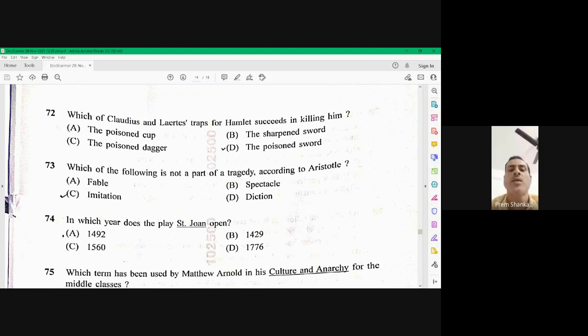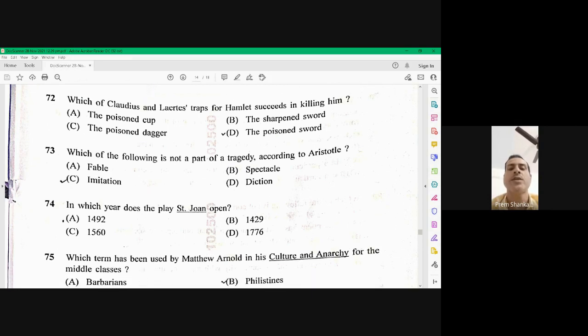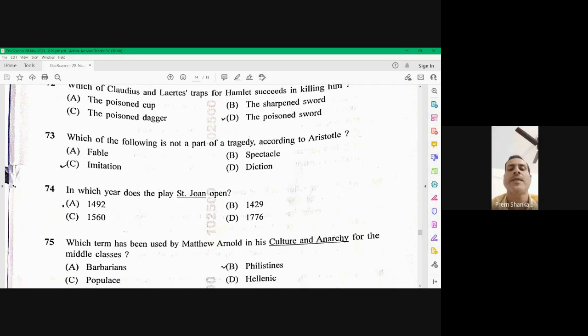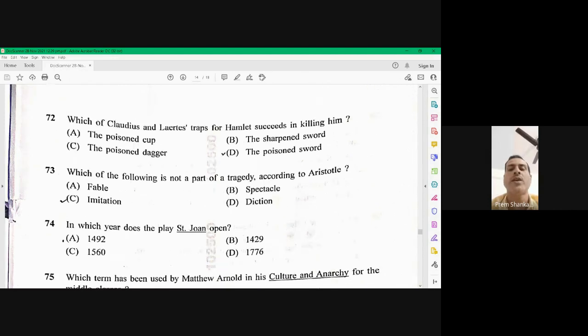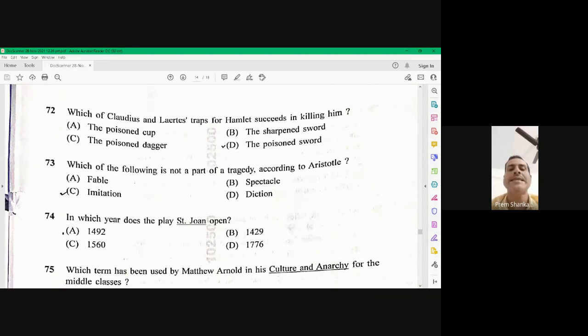Question number 73. Which of the following is not a part of tragedy according to Aristotle? So according to Aristotle, fable or plot, a spectacle, diction. These three are the parts of the tragedy where imitation is not a part of tragedy. There are six parts of tragedy defined by Aristotle. Imitation is not there. Fable, there is a confusion between fable and imitation. So fable is also called as plot. So that is the right option. So imitation is the right option here. 73 C. Imitation is not a part of tragedy.